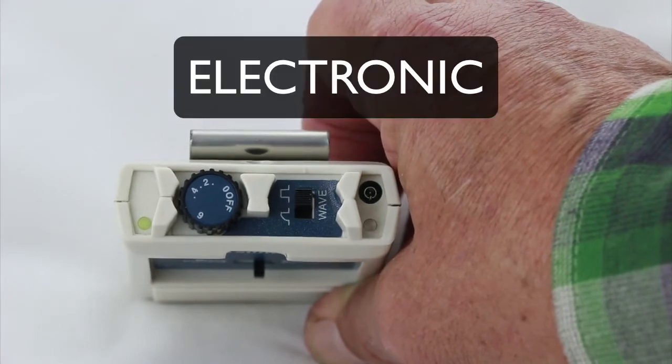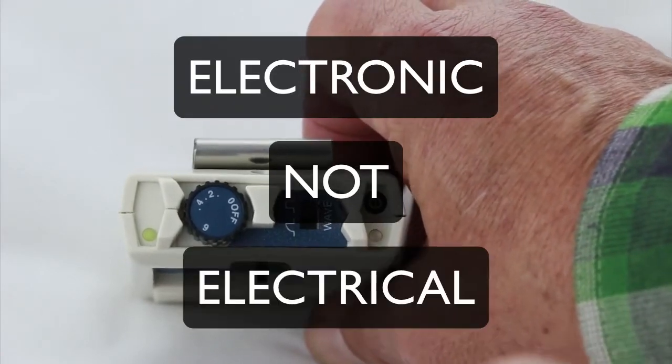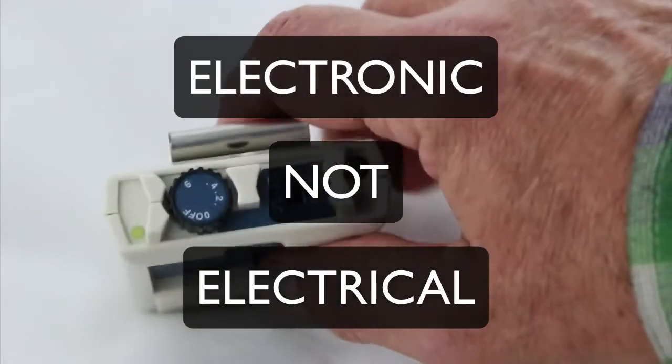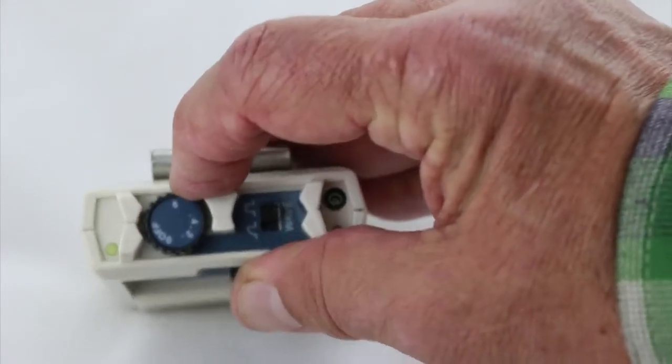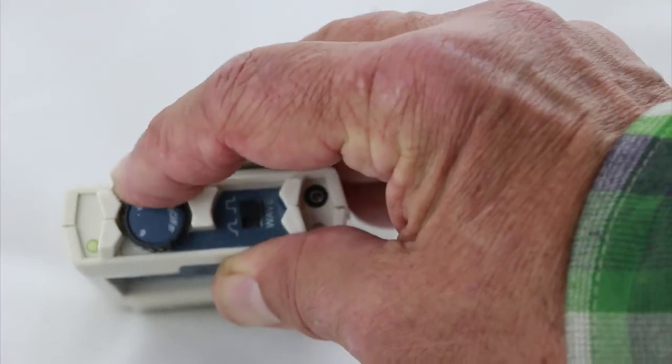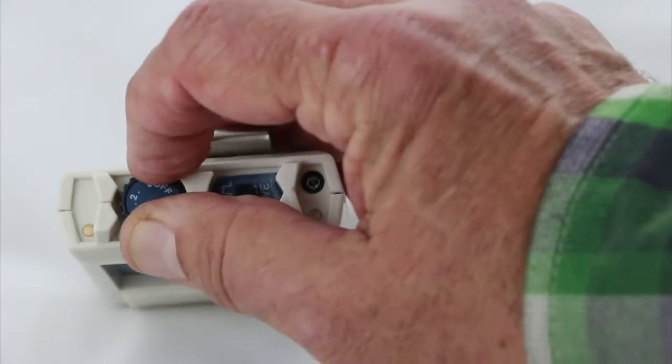Remember that these units are electronic units, not electrical. So it either works or it doesn't. If the battery gets too low, it will simply not work. But the battery indicator tells you that the unit is on and that the battery is good.